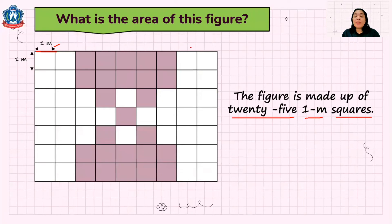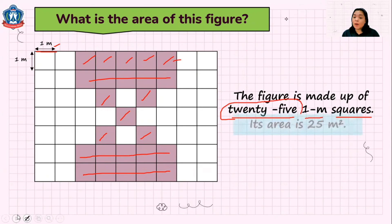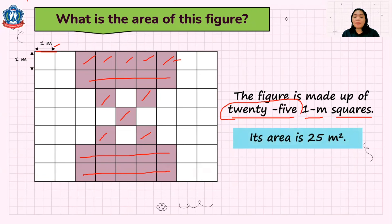Let's count if there are 25 1 meter squares: 1, 2, 3, 4, 5 — so this is 5. This is also 5, so 10. Another 5 is 15. Another 5 is 20. Then 21, 22, 23, 24, and 25. Correct. So there are 25 1 meter squares. So the area is 25 square meters.